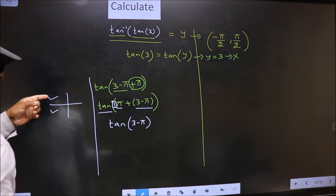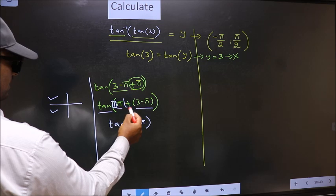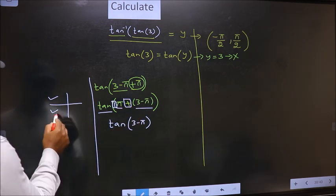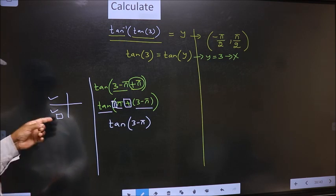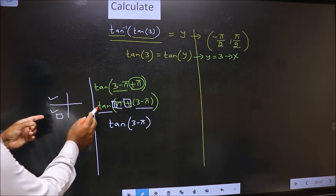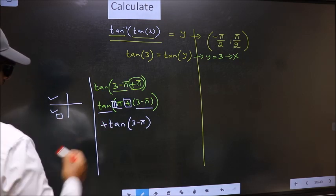Now to select the quadrant, we should look at this symbol. Here we have plus, that means the angle lies in the third quadrant. And in the third quadrant, tan is positive, so put plus.